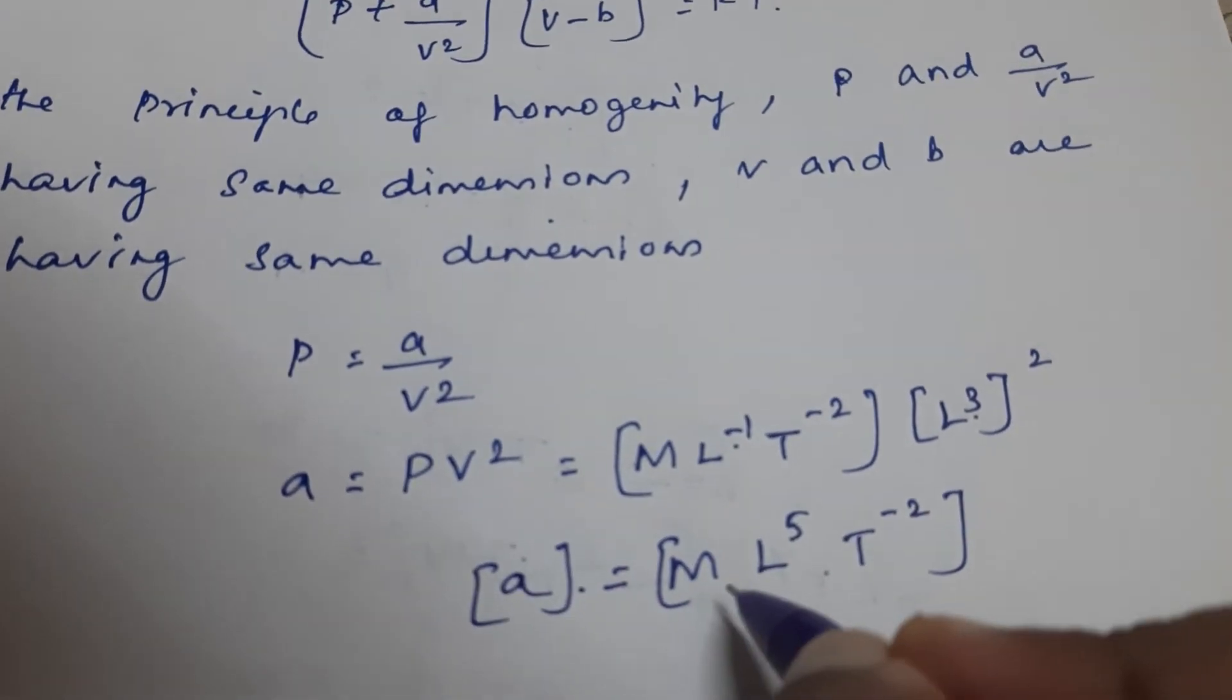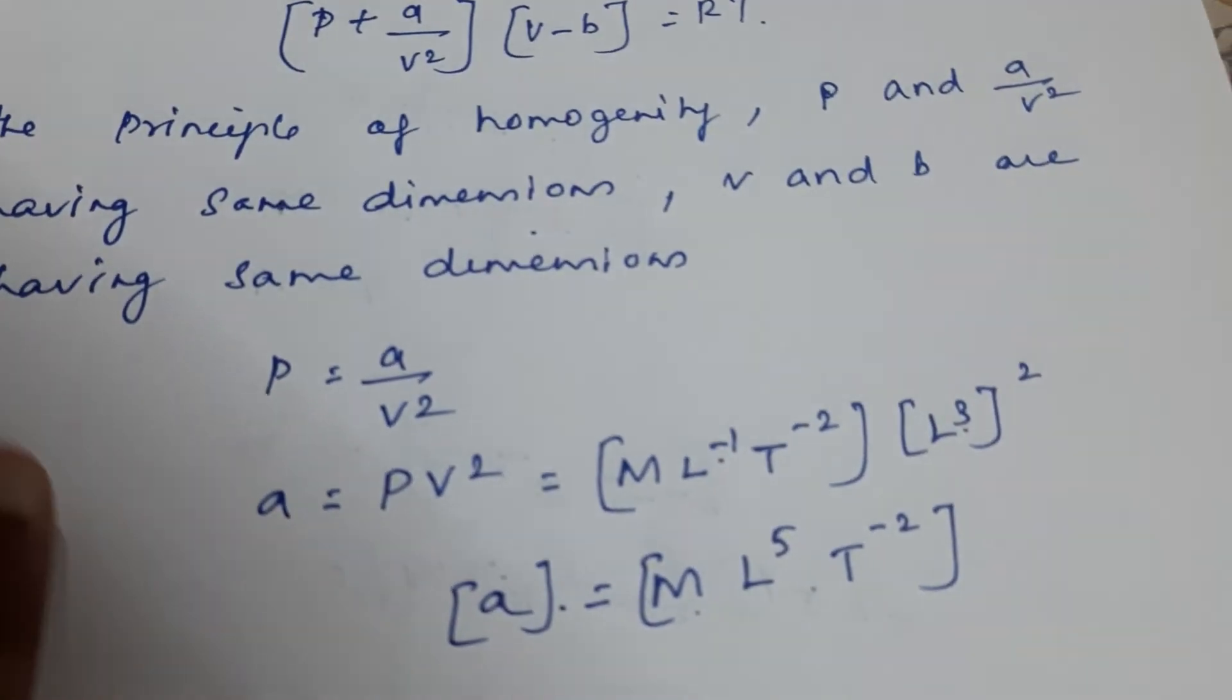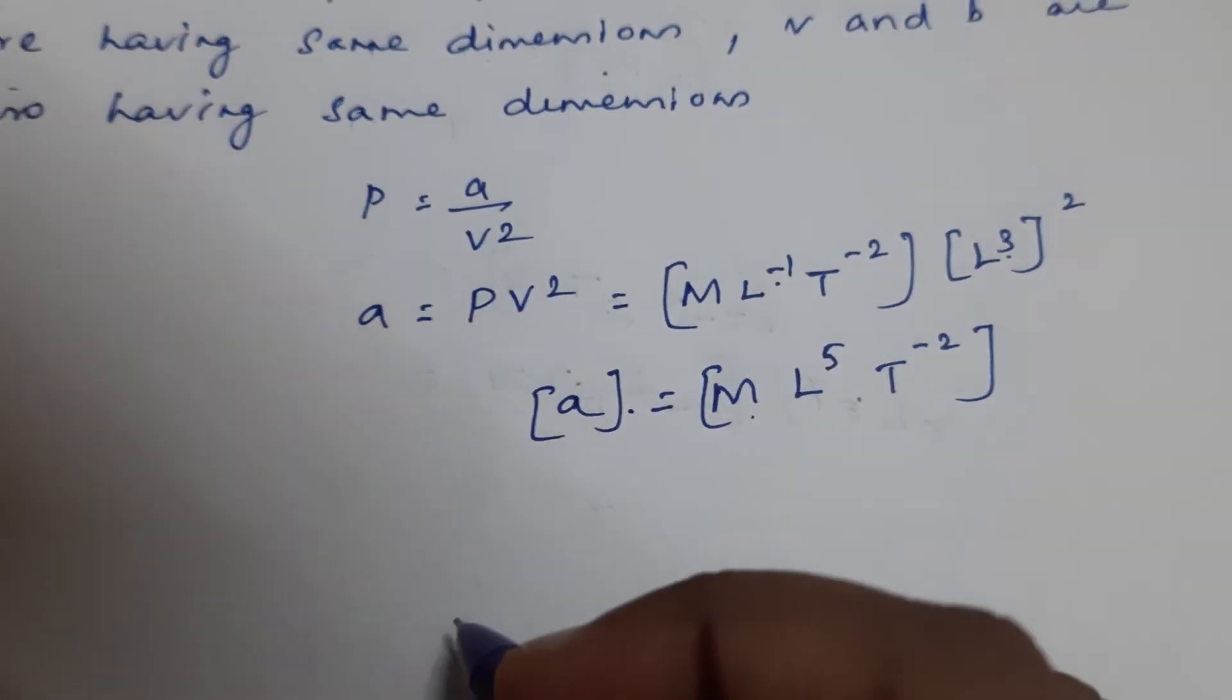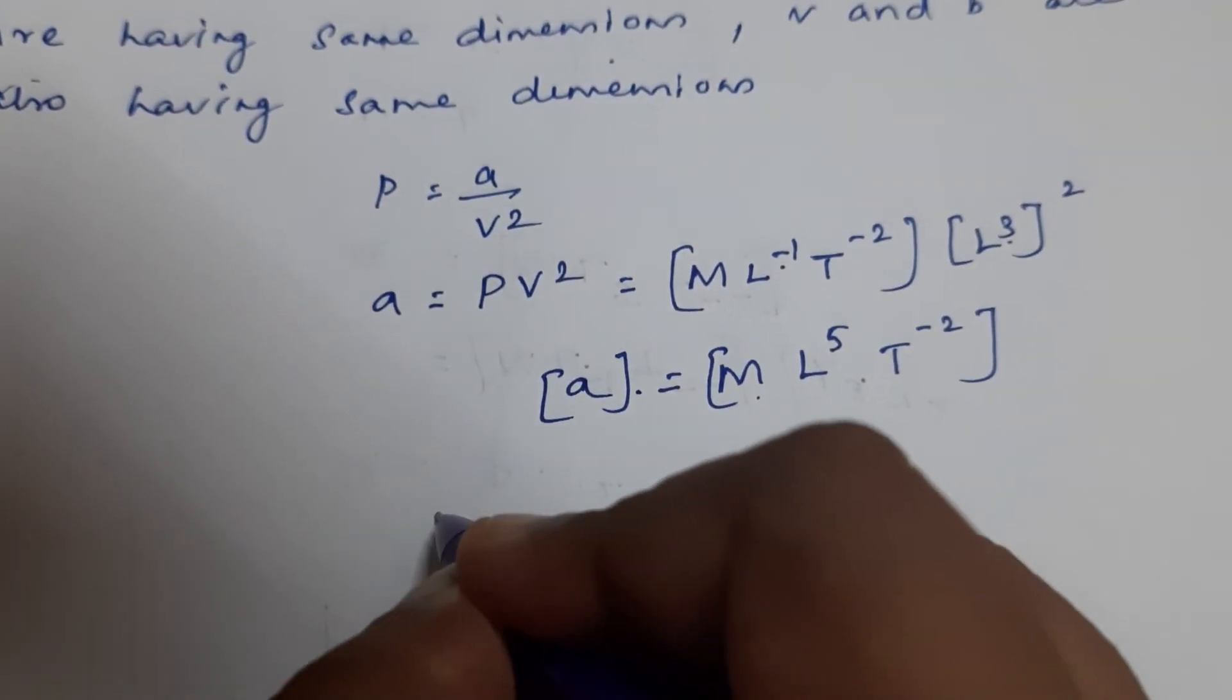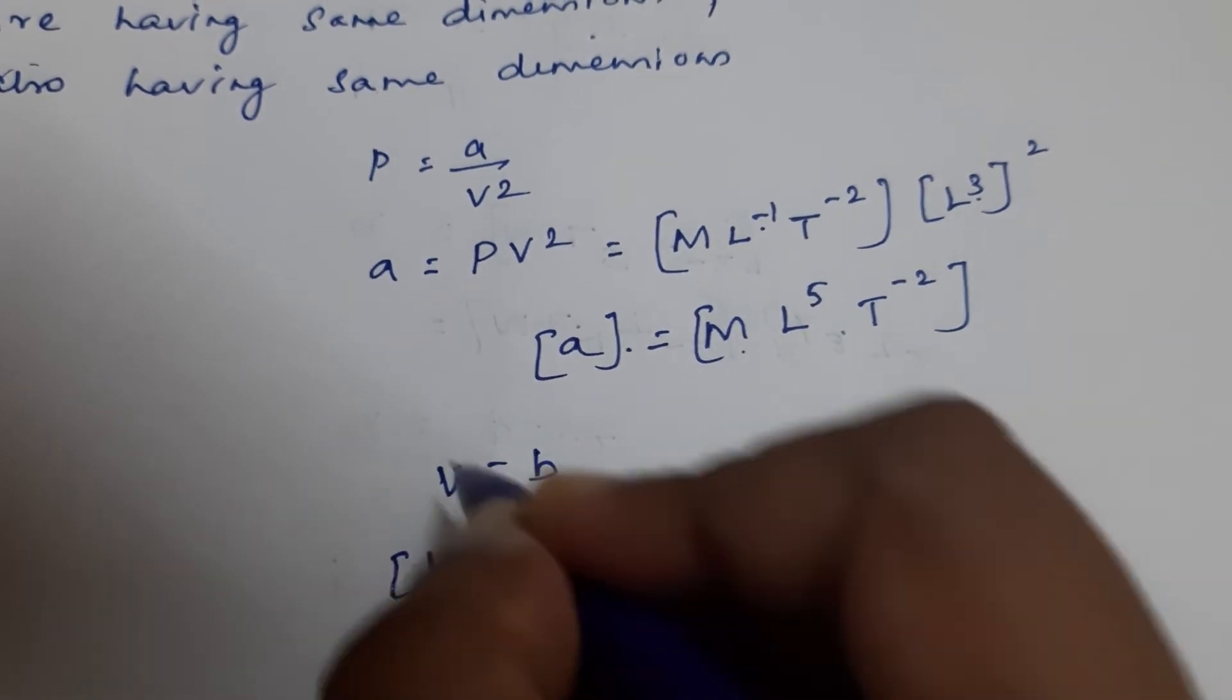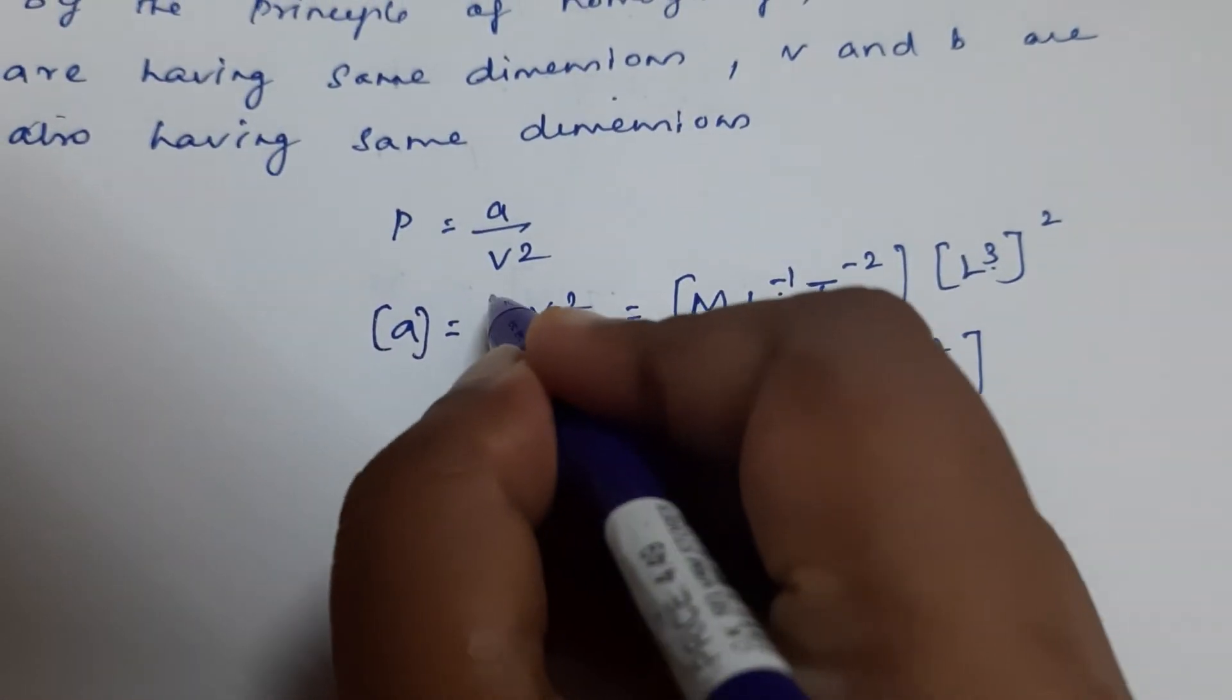Now we will go for b. V is equal to b, so b is equal to V. We have to put the square brackets everywhere to denote dimensions.